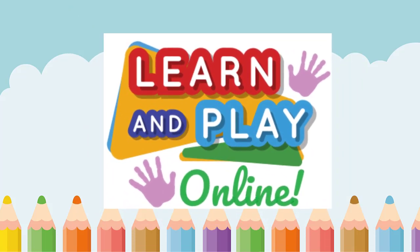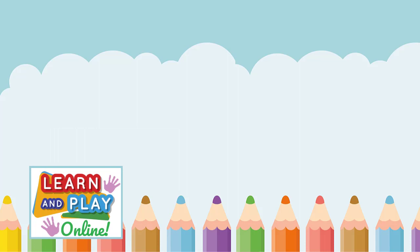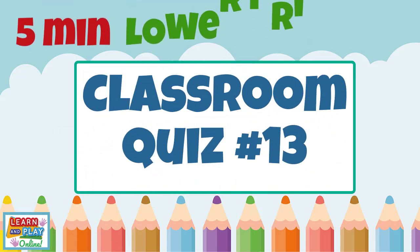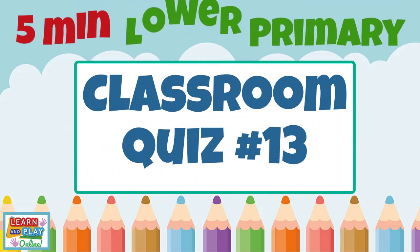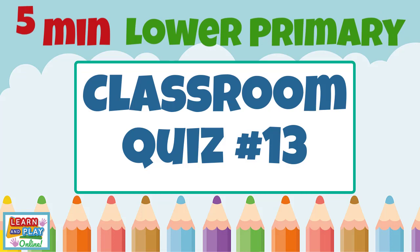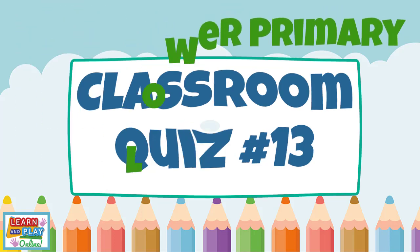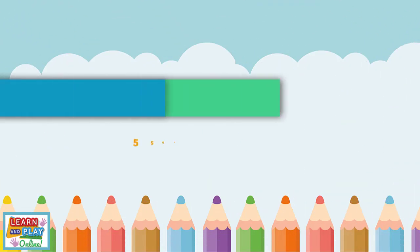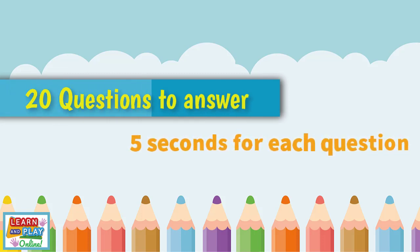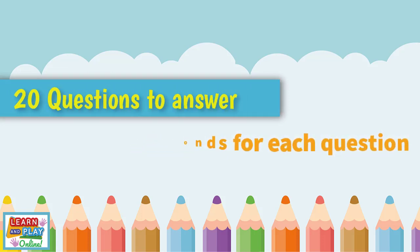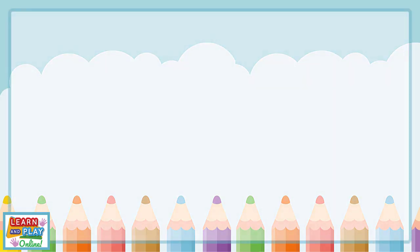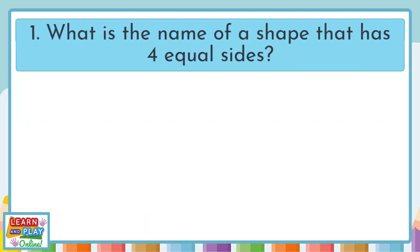Learn and play online. Welcome to our five minute lower primary classroom quiz number 13. You'll have 20 questions to answer and only five seconds for each question. Question one: What is the name of a shape that has four